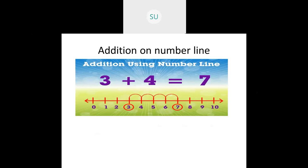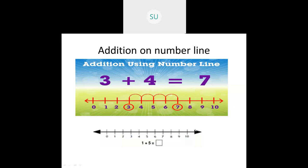Then we saw addition on a number line. If they are asking you, for example, 3 plus 4 — first you'll circle the number 3, then count 4 steps ahead: 1, 2, 3, 4. So we arrived at 7 and our answer is 7. This is how you do addition on a number line.